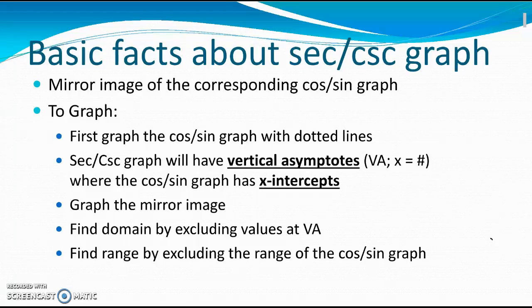In our video today we are going to learn about how to graph secant and cosecant graphs. When we work on these graphs, we are going to first start with our corresponding cosine or sine graph. You're essentially going to do all the same pre-planning where you find the period, the scale, the amplitude, the phase shift, and the vertical shift.